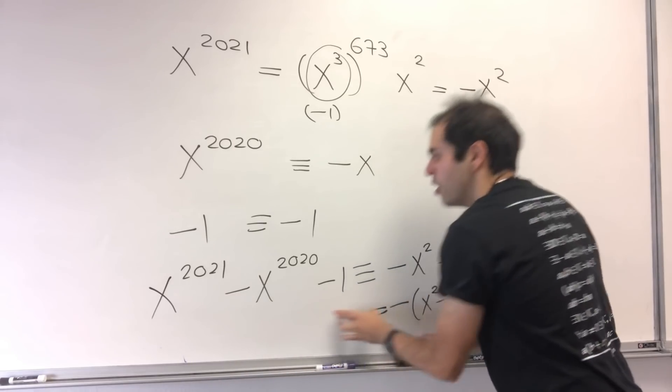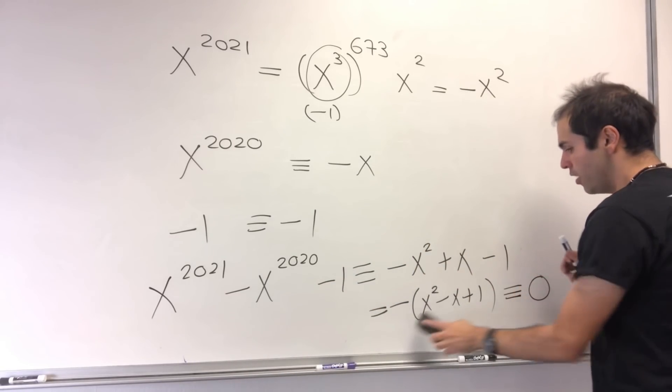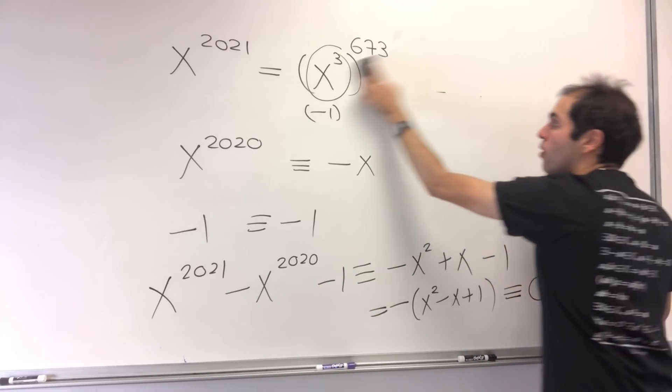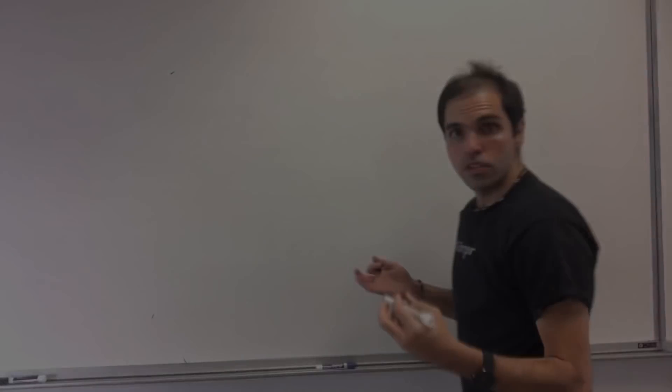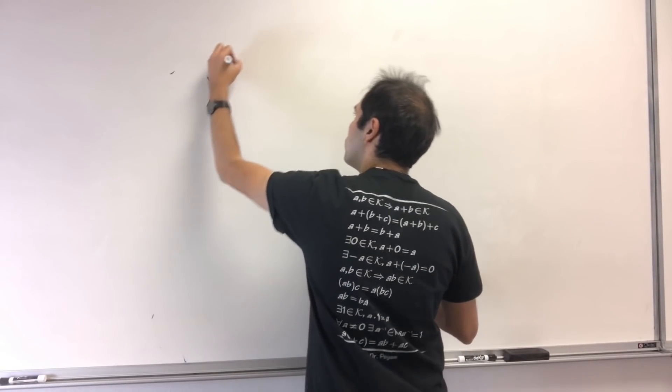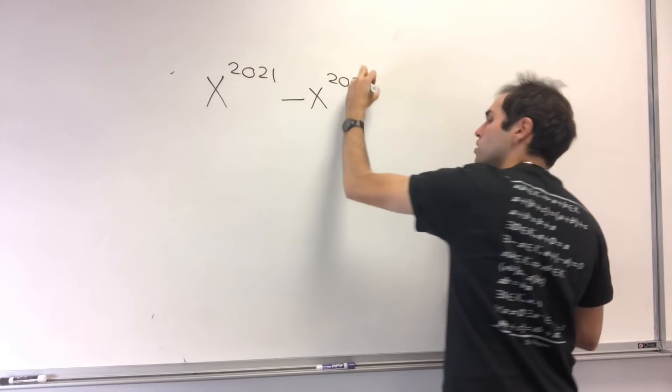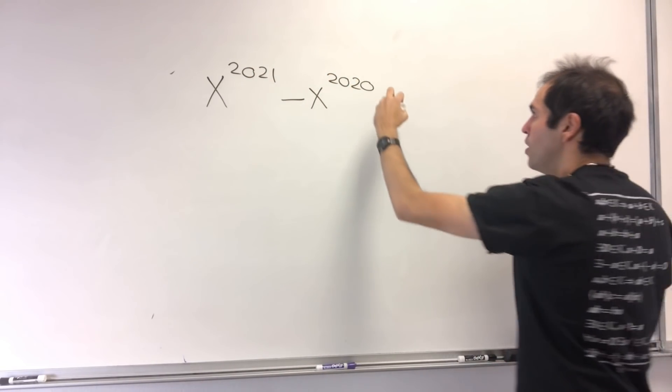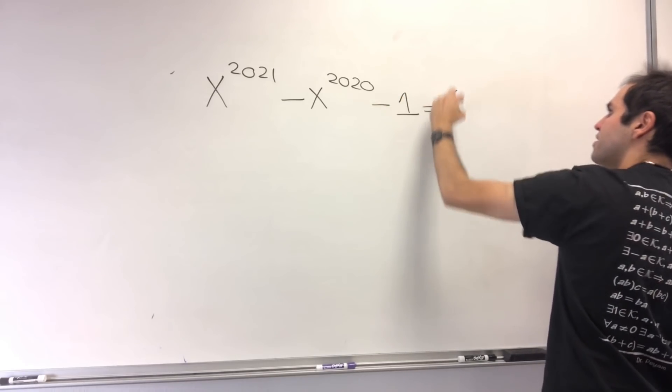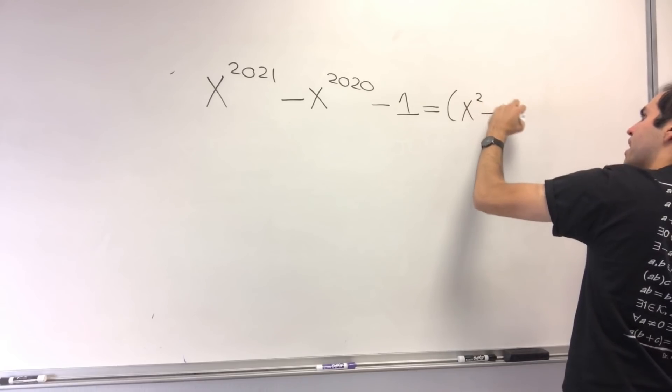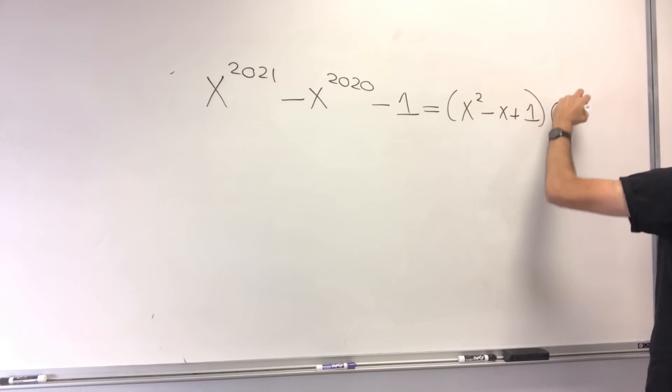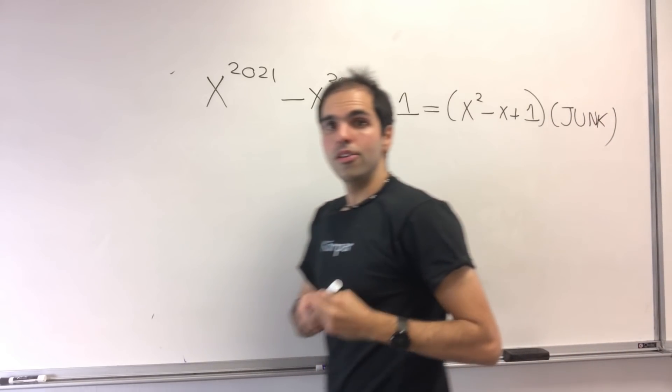So now, what is this saying about this monster? Well, it's just a multiple of this nicer thing. So, x^2021 - x^2020 - 1, well, that's the same thing as x^2 - x + 1.